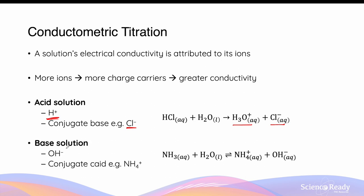Similarly, base solutions can also be conductive because they produce hydroxide ions and conjugate acids, which can sometimes be ionic as well. For example, ammonia ionizes water to produce ammonium ions and hydroxide ions.